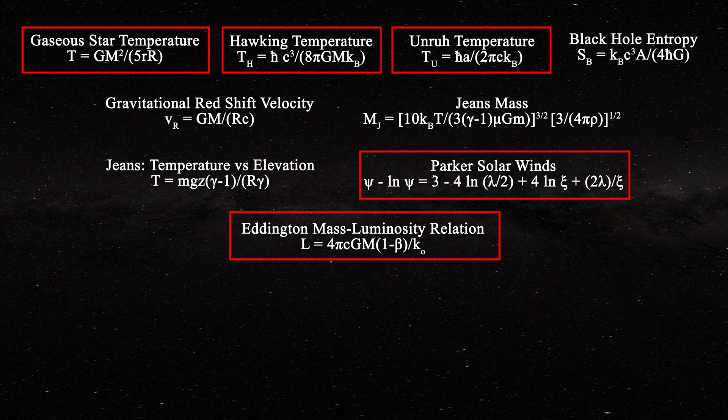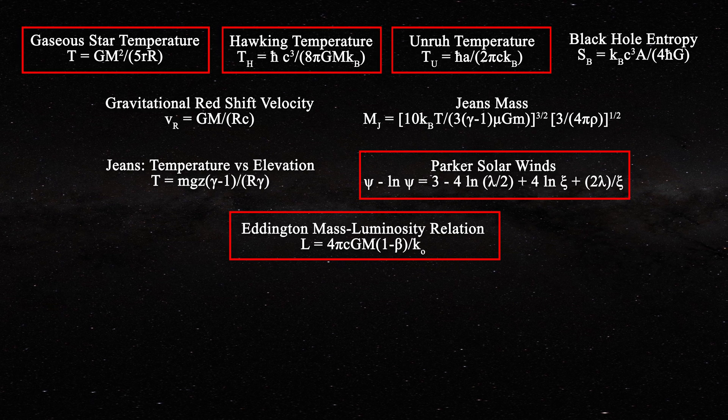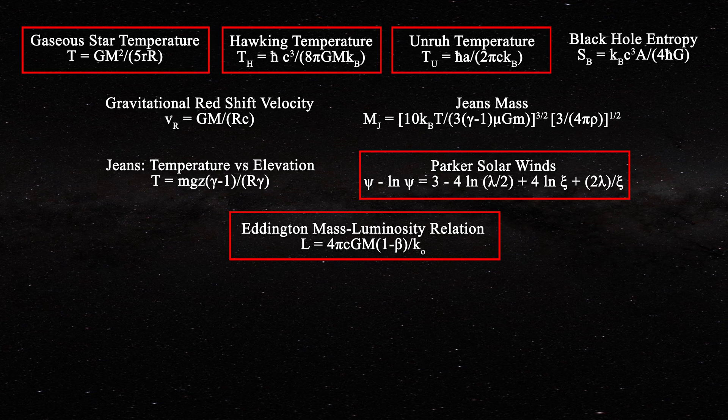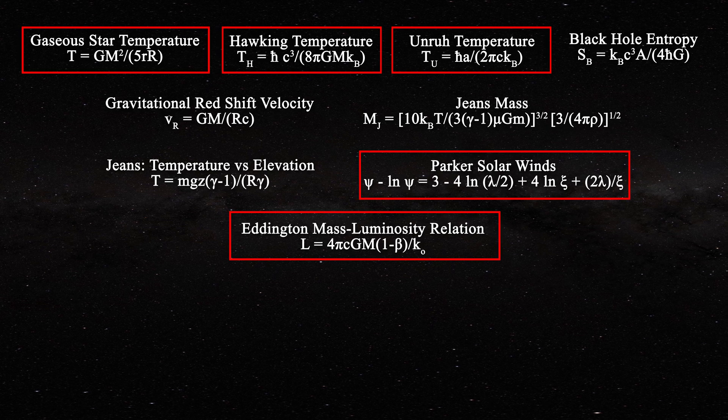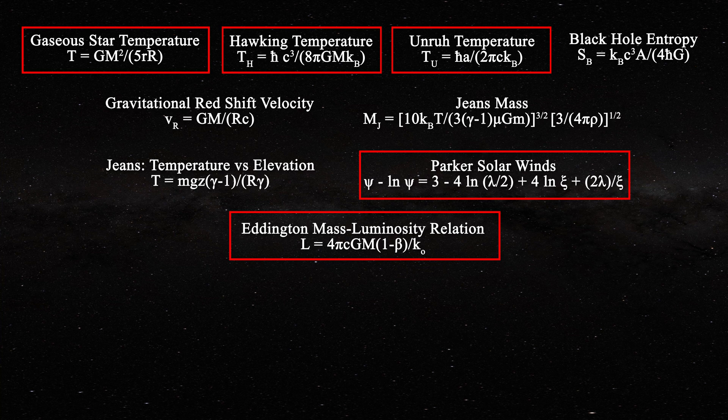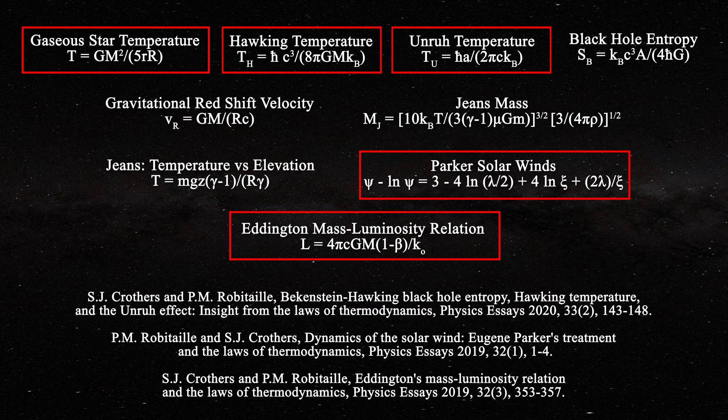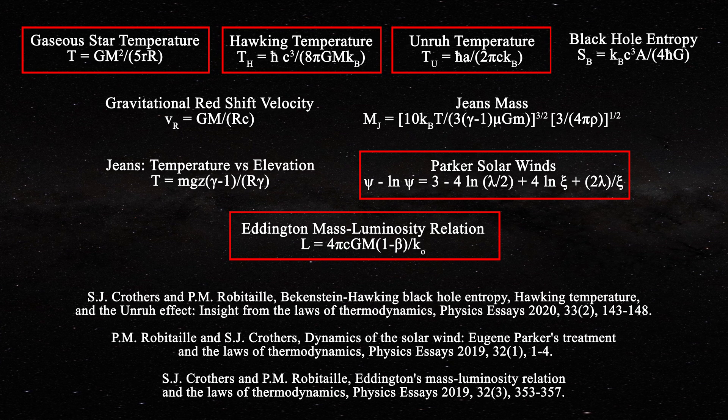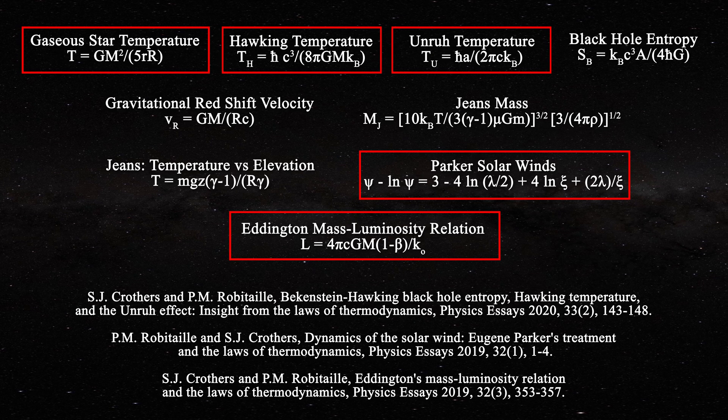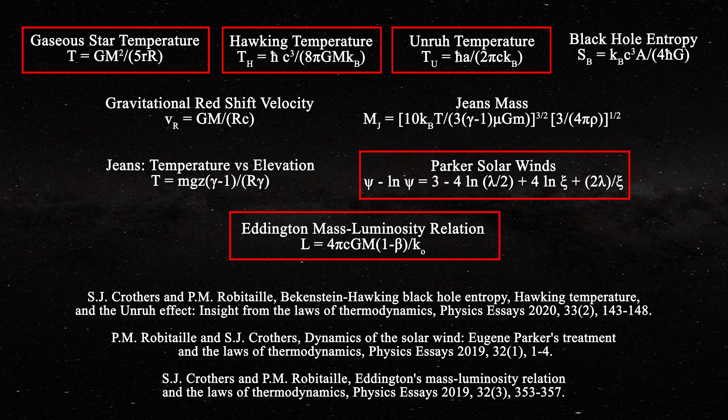Astrophysicists often create the problem as they assign temperatures using expressions which account for gravitational potential. But in reality, potential energy cannot manifest any temperature. These questions have all been addressed in my joint papers with Steven Crothers. As a rule, equations which contain the universal constant of gravitation are very likely to be invalid relative to thermodynamic character.